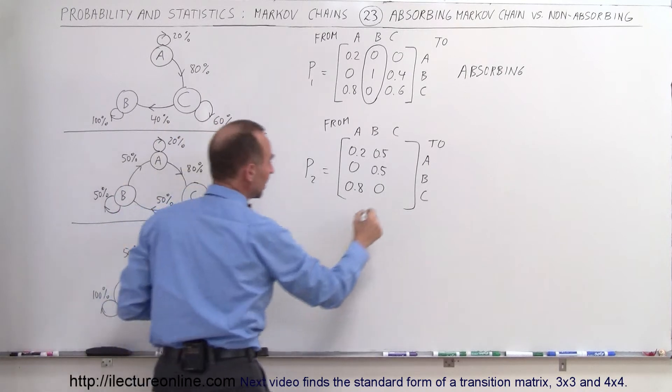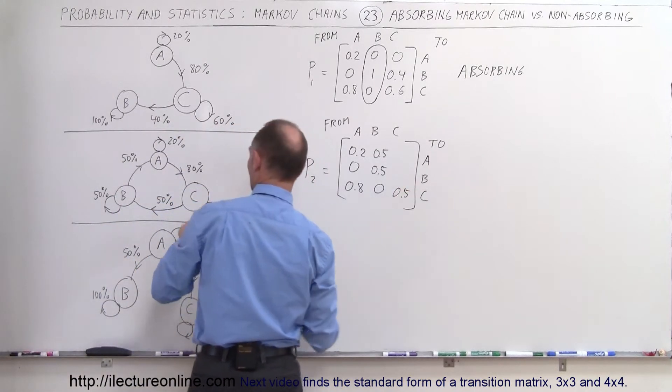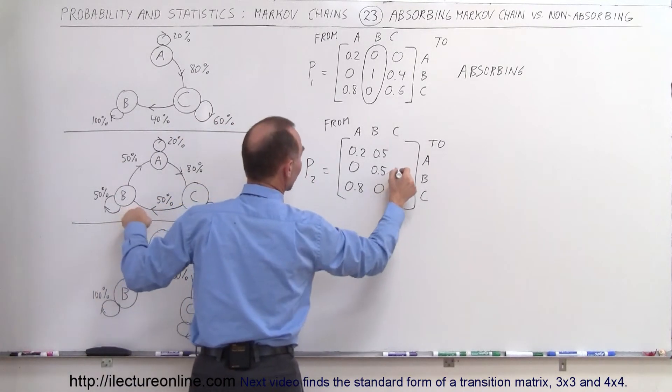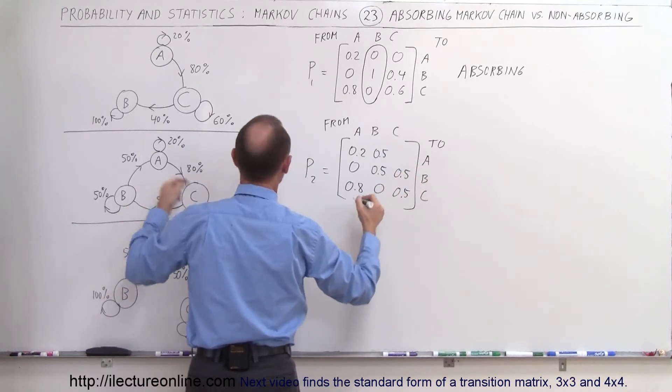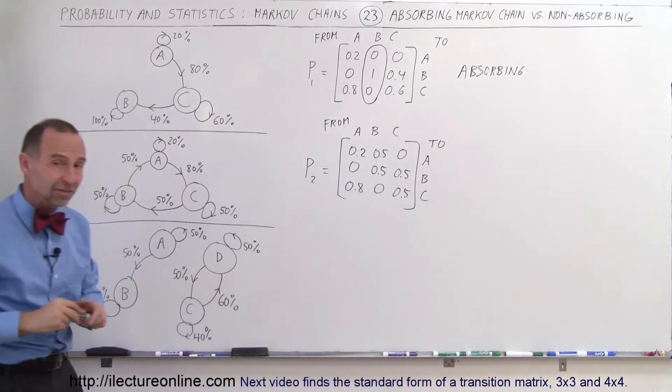From C, staying at C is 0.5. From C going to B is 0.5, and from C going to A is 0.